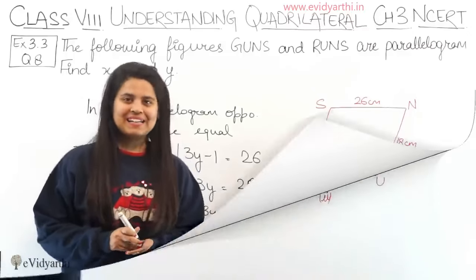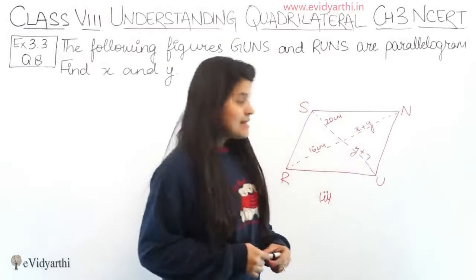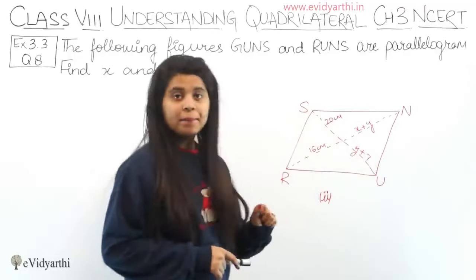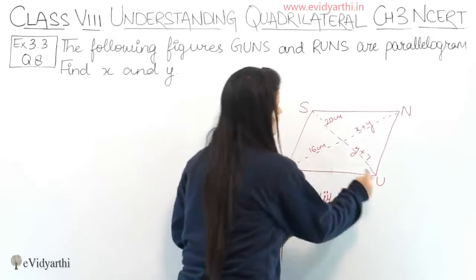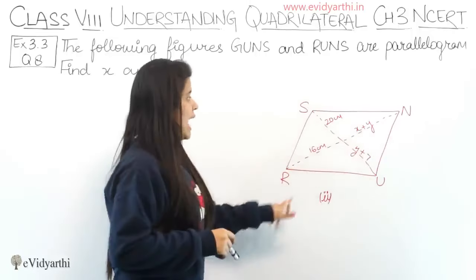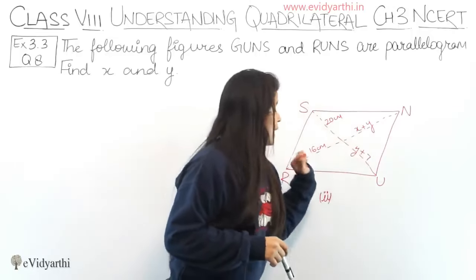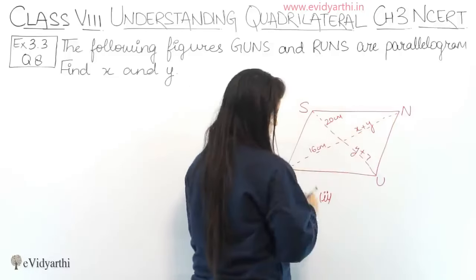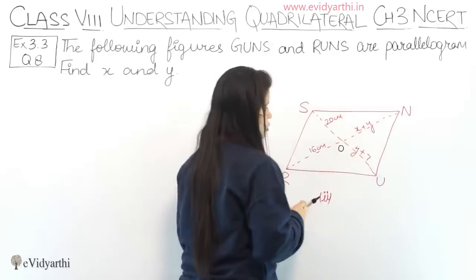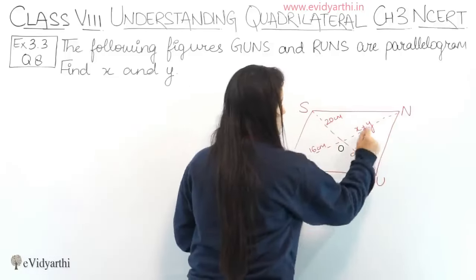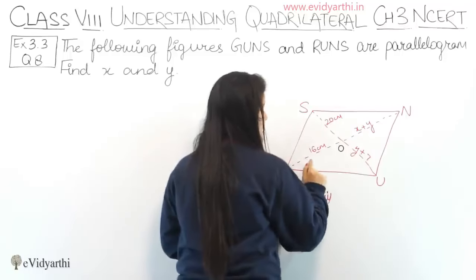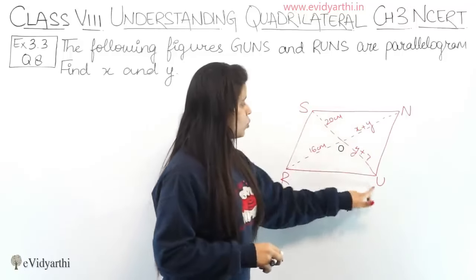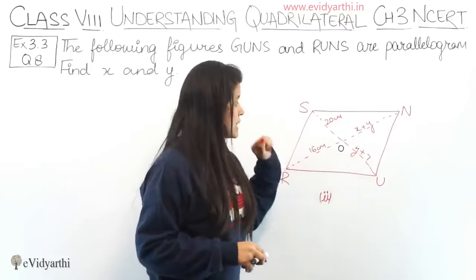Now coming to the second part. In the second part we have parallelogram RUNS. It has two diagonals: RN and US. The intersection point is named O. ON is X plus Y, RO is 16 centimeters, OS is 20 centimeters, and OU is Y plus 7.